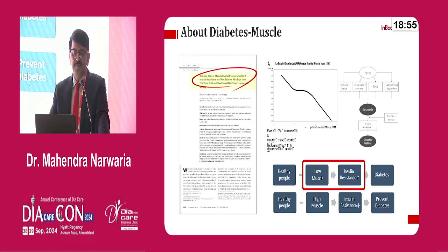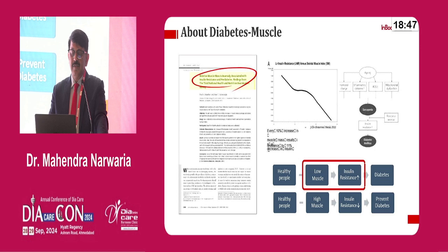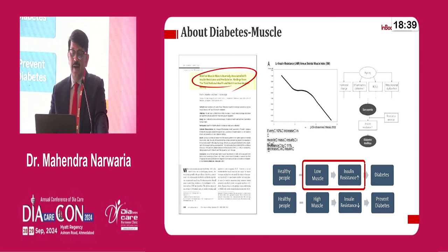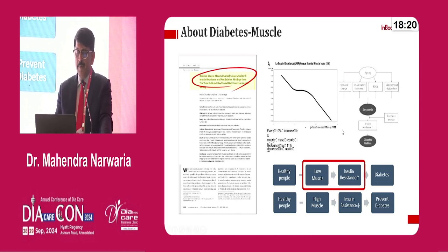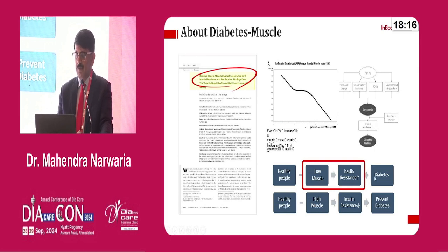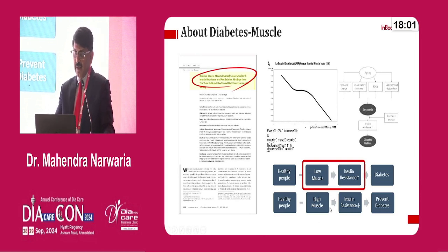If you talk about muscle mass and diabetes, there are publications which say every 10% increase in muscle mass results in an 11% reduction of insulin resistance in these patients. Another publication states that relative muscle mass is universally associated with insulin resistance in pre-diabetic patients, from findings of the third National Health and Nutrition Evaluation Survey. A person with low muscle mass may have increased insulin resistance and develop diabetes, while a person with high muscle mass has low insulin resistance and may prevent diabetes. Our target should be maintaining high muscle mass and reducing insulin resistance.